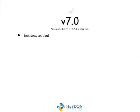Drupal 7 was a huge release — 1,057 days between Drupal 6.0 and 7.0. That was a gigantic effort and a lot of work, but in the end I think it's worth it.